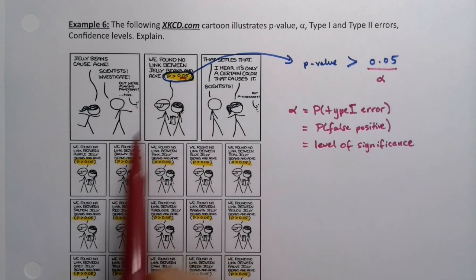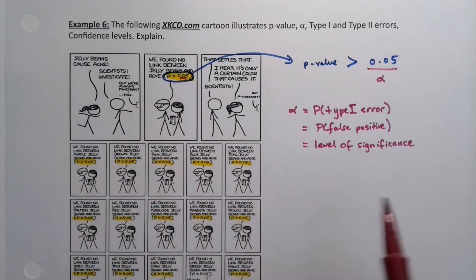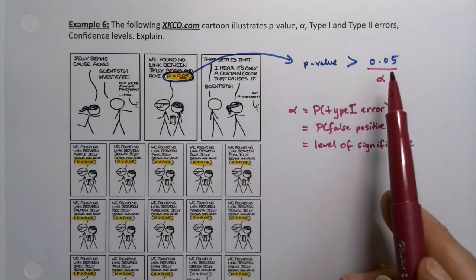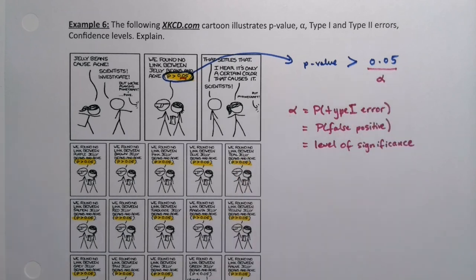So when you see all these little 0.05s, that lets you know that alpha was 0.05 for all of these tests. They're not telling us the P values. All they're telling us is that they're greater than 0.05 and therefore we would not reject H0.